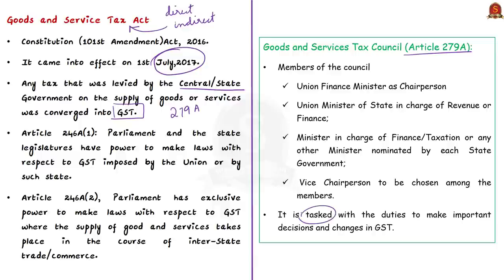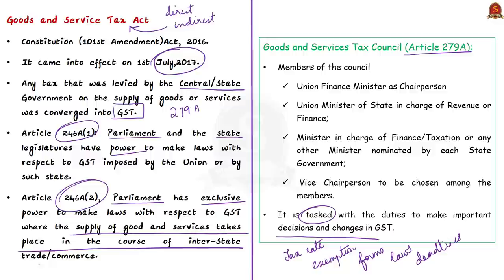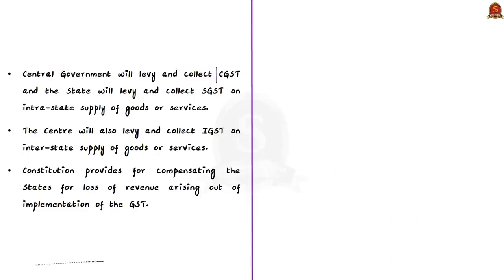The GST Council is tasked with making important decisions and changes to GST, including determining the tax rate, tax exemption rules, due dates for submitting GST forms, tax-related laws and deadlines, and special exemptions for some states. According to Article 246A(1), both Parliament and state legislatures have the power to make laws with respect to GST imposed by the Union or by the respective state. According to Article 246A(2), Parliament has exclusive power to make laws with respect to GST where the supply of goods and services takes place in the course of interstate trade or commerce. In GST, the central government levies and collects CGST and the state government levies and collects SGST on intrastate supply of goods or services.